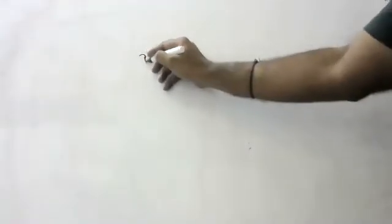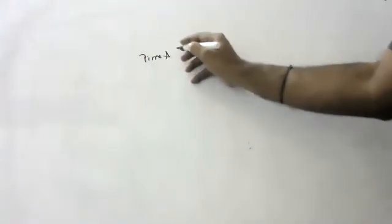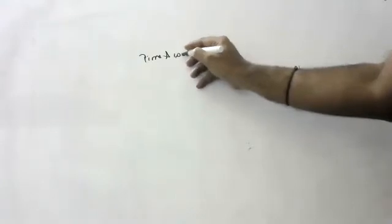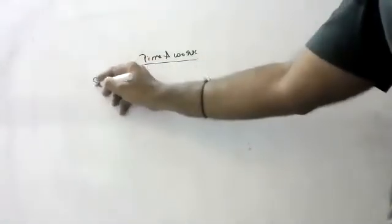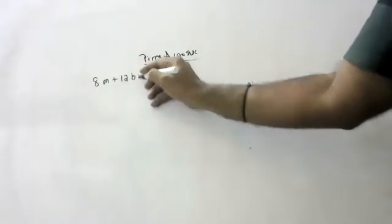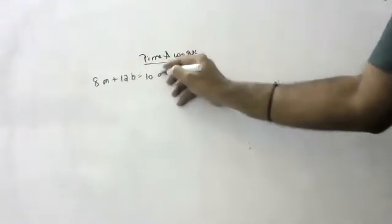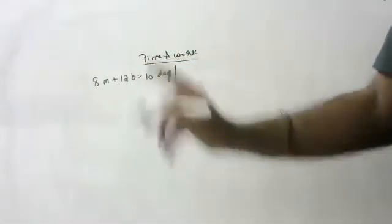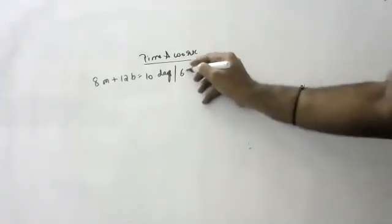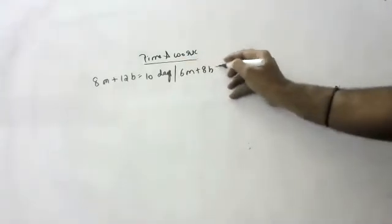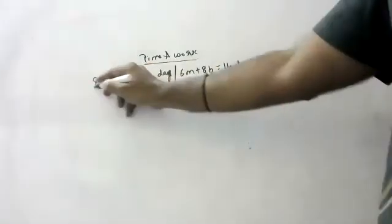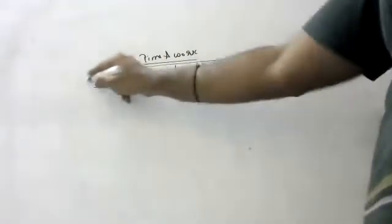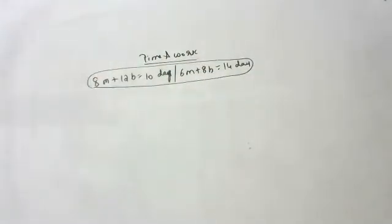Today we will discuss time and work sums using linear equations. This is a very important question type. The question will be like this: 8 men and 12 boys can finish a work in 10 days, and 6 men and 8 boys can finish a given piece of work in 14 days. We need to find how many days each man and each boy alone will take to complete the work.